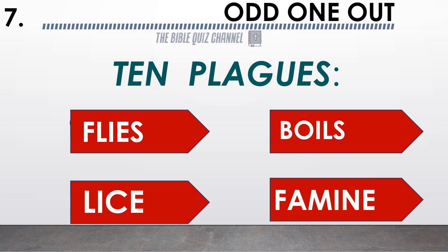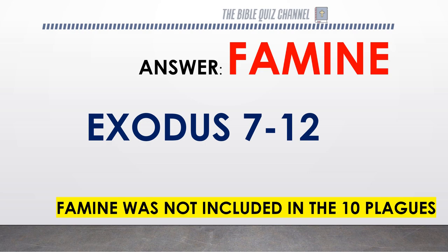10 Plagues — flies, boils, lice, famine. Which is the odd one out? The answer is famine. Famine was not included in the 10 plagues.